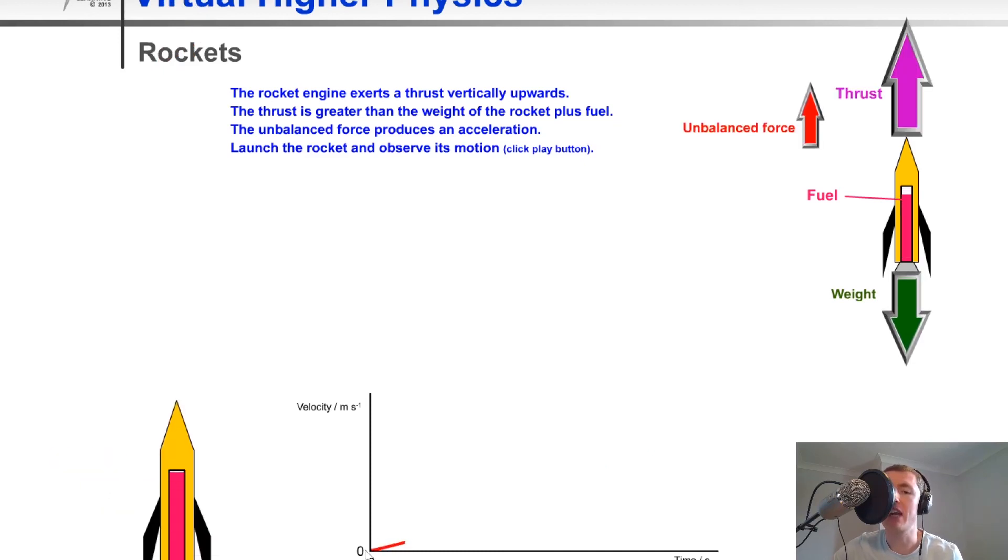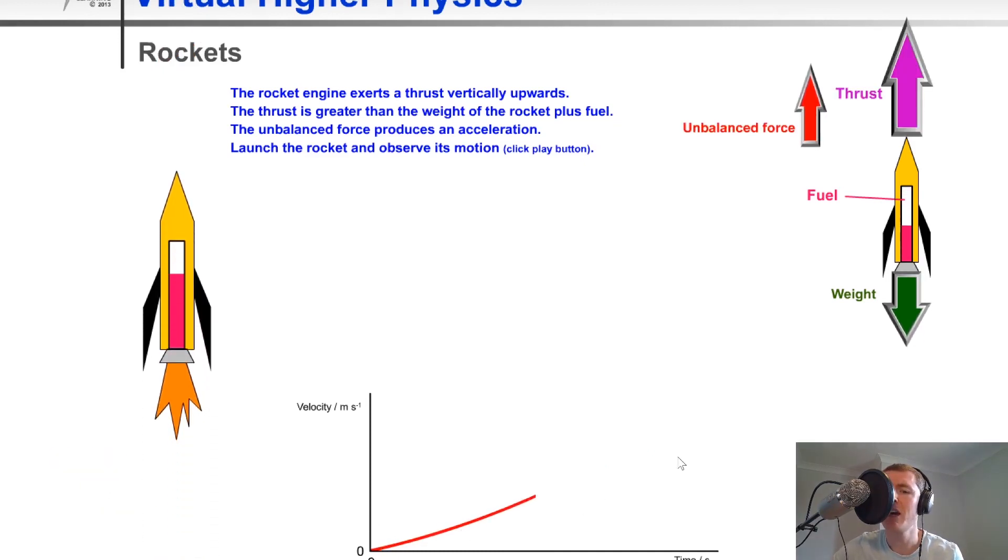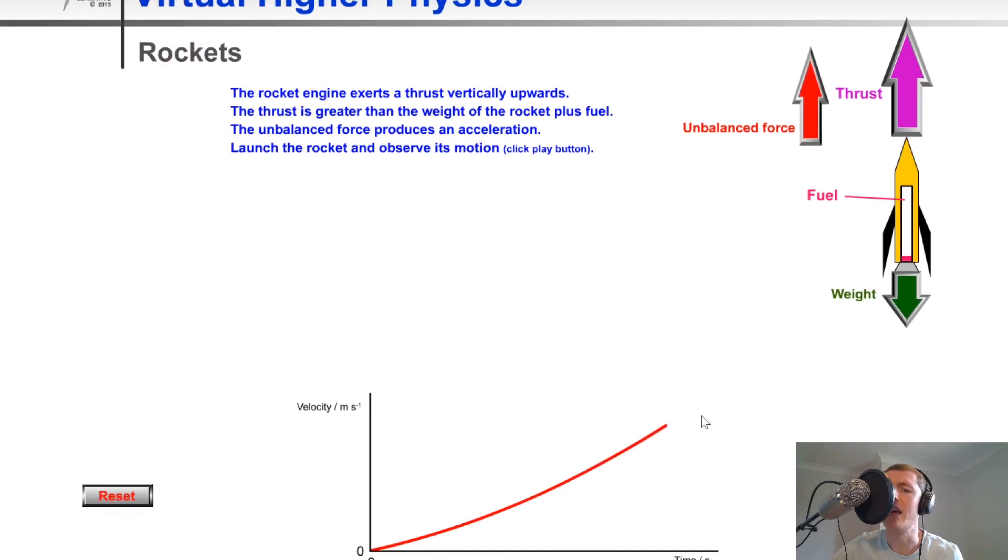And lastly, just to show you that again, you'll notice the velocity time graph is not actually a straight line. It's more of a curve. And the reason for that is that the acceleration there is not constant. And the acceleration is not constant because the unbalanced force is not constant. It's constantly changing as the fuel runs out.